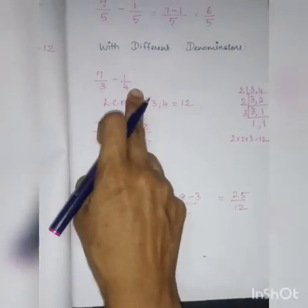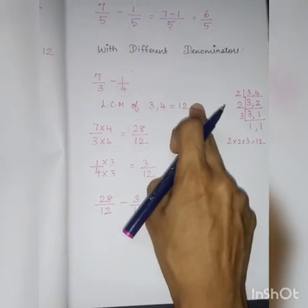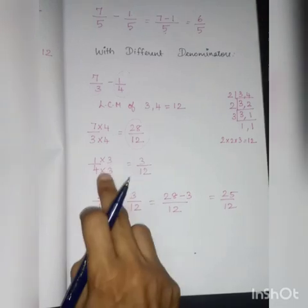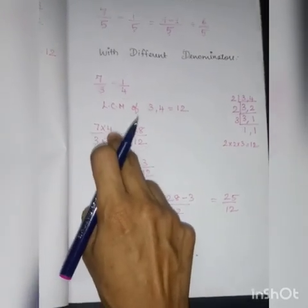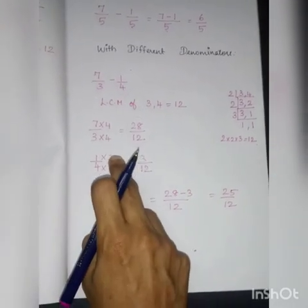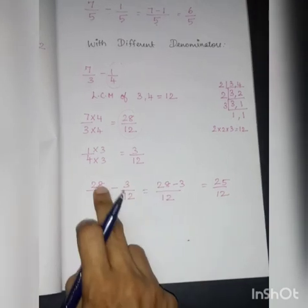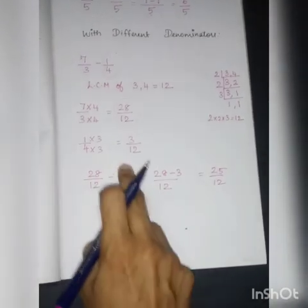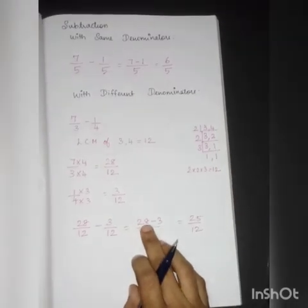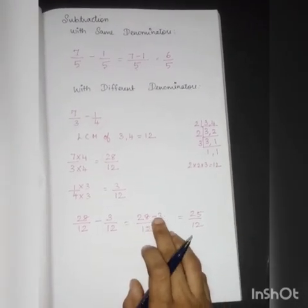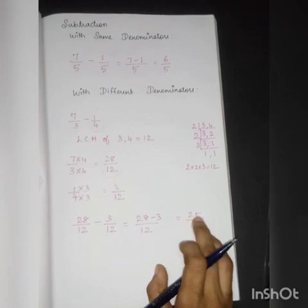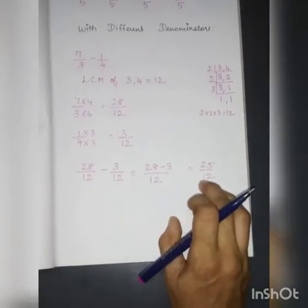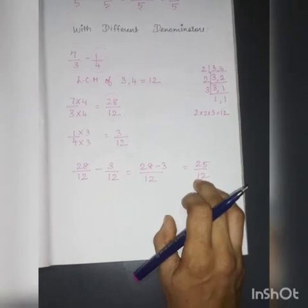Both denominators were different, so I took the LCM, which is 12. Four 3s are 12, so 7 times 4 gives 28. Three 4s are 12, so 1 times 3 gives 3 by 12. Then 28 by 12 minus 3 by 12 — 12 is common, I subtract the numerators: 28 minus 3 gives 25 by 12. This is how you should do subtraction with different denominators.